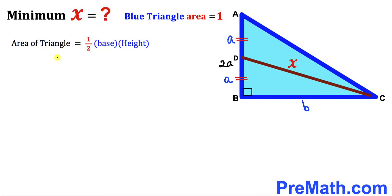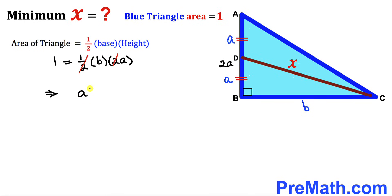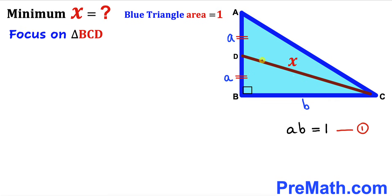Filling in the formula: 1 equals one half times b times 2a. The 2 and the one-half cancel, so we end up with a times b equals 1. I'm going to label this as equation number 1.